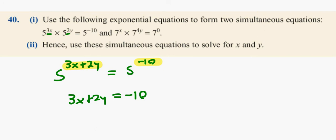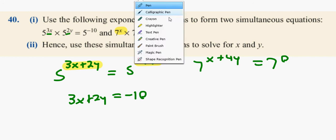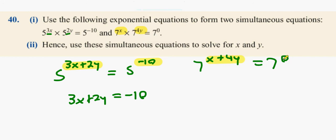Because the powers add, the base number is the same. So what you have: 3x plus 7y equals minus 10. Awesome. All right, what was the next one? Seven to the power of x plus 4y equals 7 to the power 0. And then x plus 4y equals zero. That's x plus 4y equals 0.